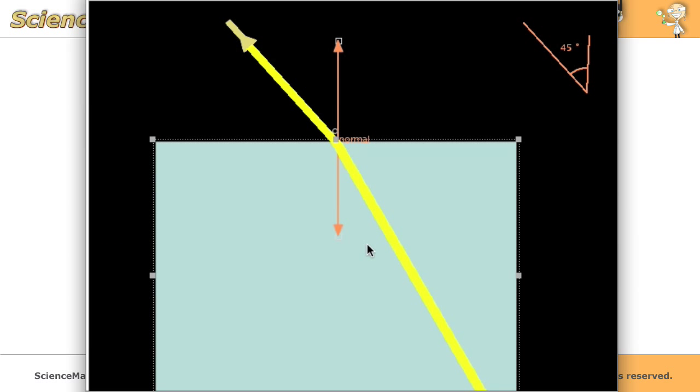So how does that work for this particular example? Well, if we take a protractor and measure the angle of incidence, we can see that we have a 45 degree angle. So we know that the angle of incidence is 45 degrees.